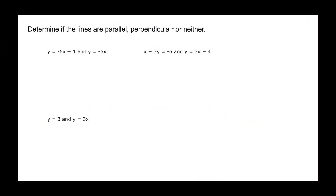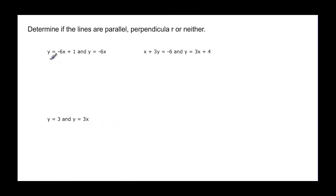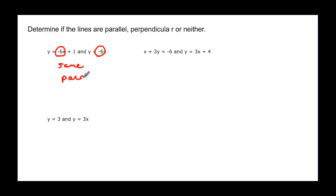Now we have some equations of lines and we want to know if they're parallel, perpendicular, or neither. Looking at this one, it's y equals slope times x plus b, so the slope here is negative six, and the slope of the other line is also negative six. They're the same slope, so we know that they are parallel.